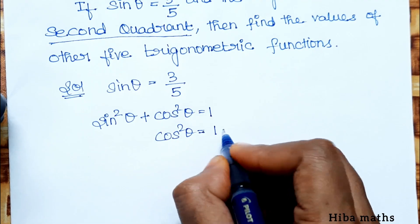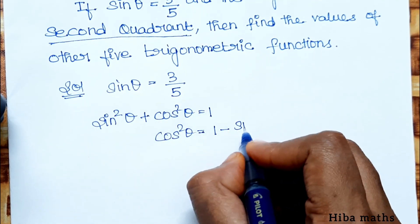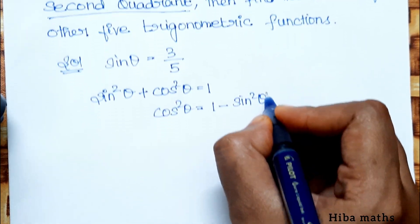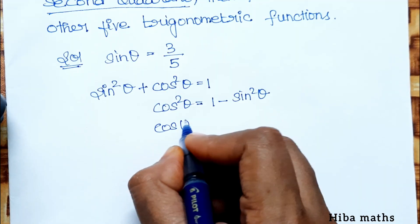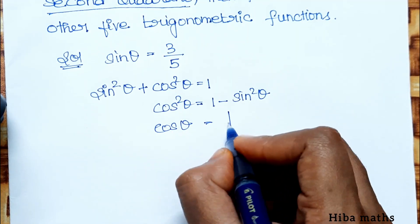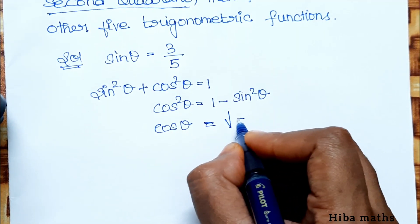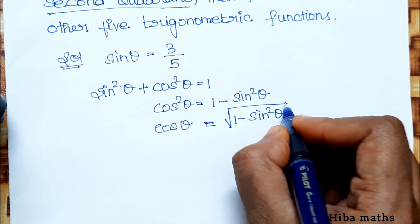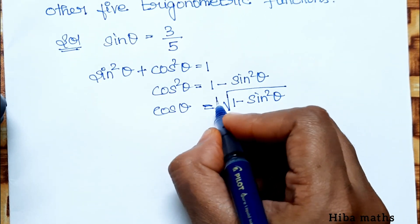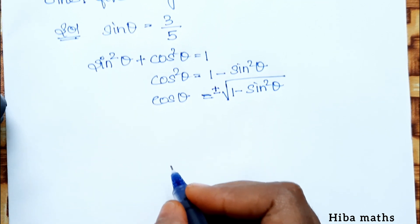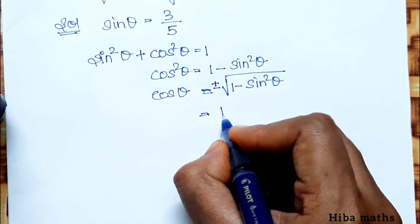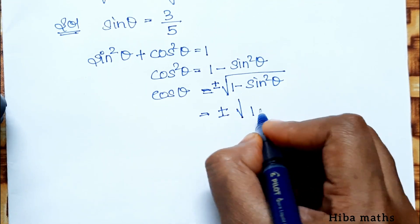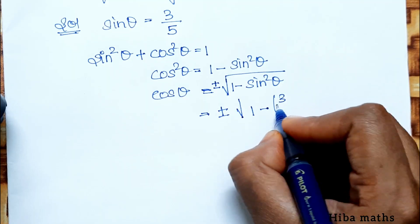So, cos²θ = 1 - sin²θ. Now, taking square root, cos θ equals plus or minus square root of 1 minus sin²θ. We will substitute the value: plus or minus root of 1 minus 3 by 5 squared.